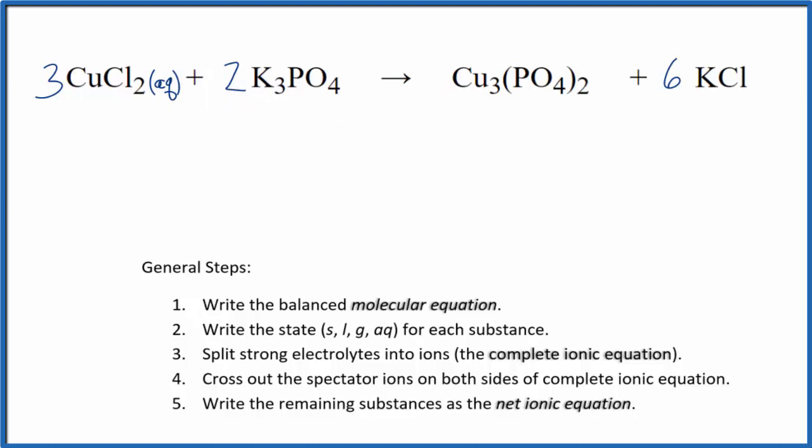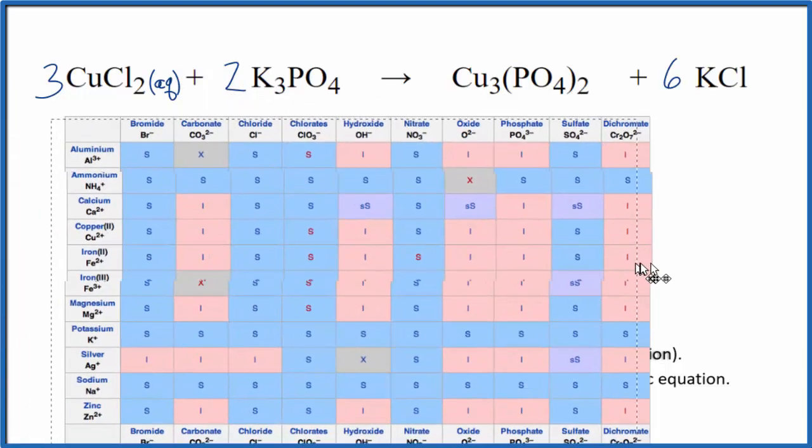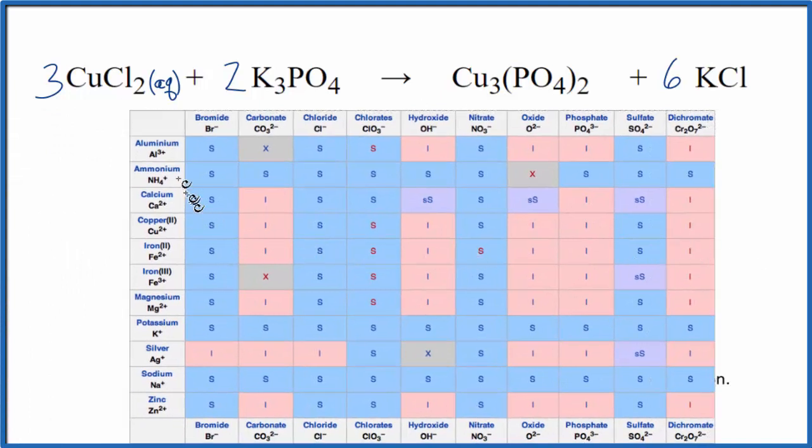Potassium phosphate should be soluble, but we could look it up on a solubility table here, and we could find potassium right here, and then we have phosphates over here. So that's soluble, so we can write Aq for that.